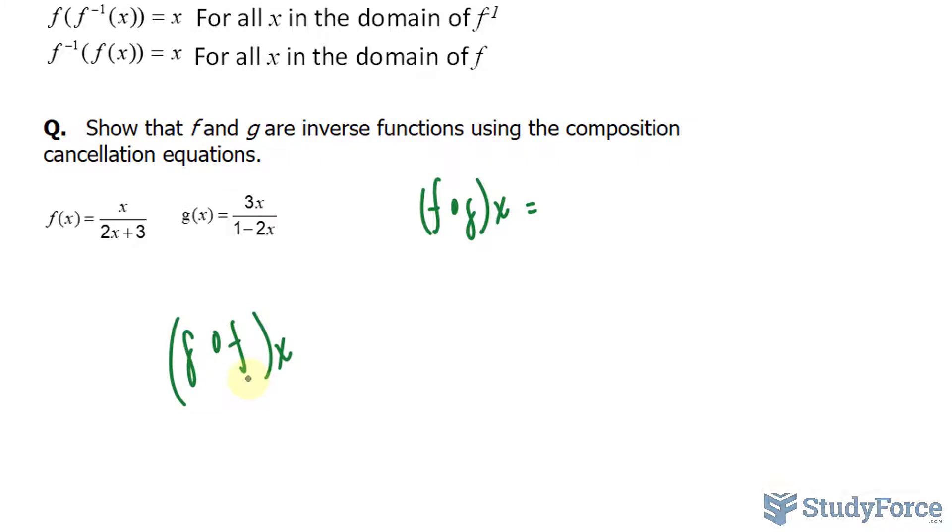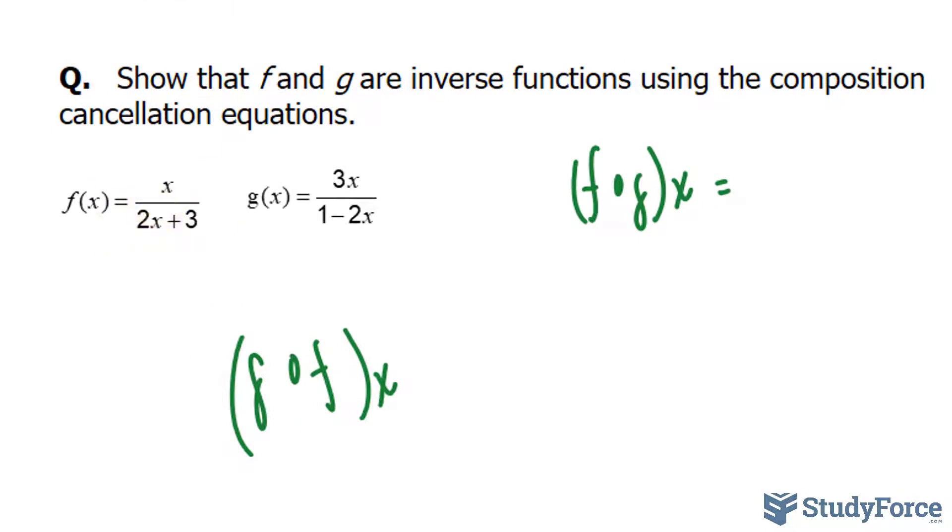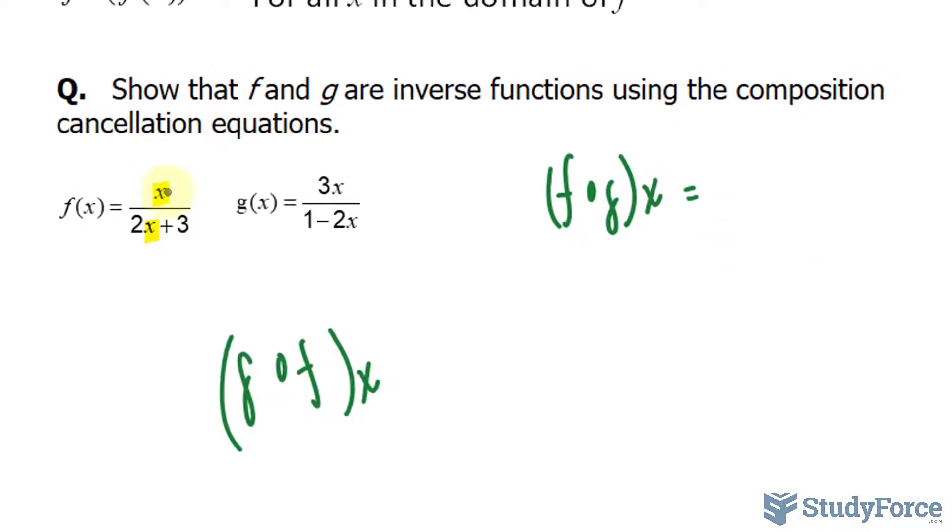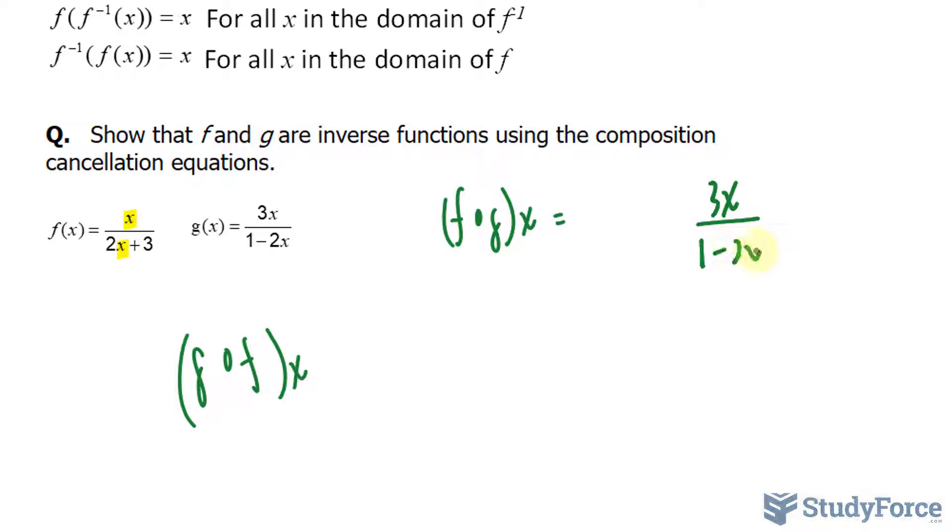Let's start with f composed of g. So our f function is right there. And everywhere we see an x, right here and right here, we have to substitute that with what g is. At the numerator position, we have 3x over 1 minus 2x. And at the bottom, we have 2 times, again, 3x over 1 minus 2x plus 3.